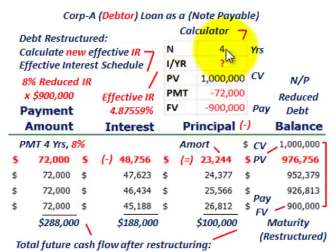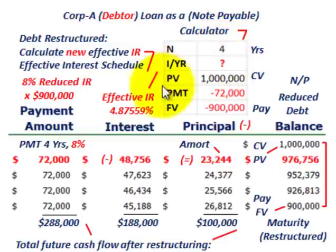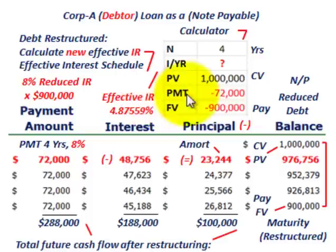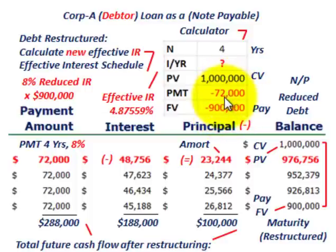On the financial calculator: the number of years is four, or four payments. We enter the present value equal to $1,000,000 carrying value as a positive amount. The payment amount is $72,000 (8% on $900,000), entered as a negative. The future value is the maturity value of $900,000, entered as a negative. The calculator gives us the effective interest rate at 4.87559%.